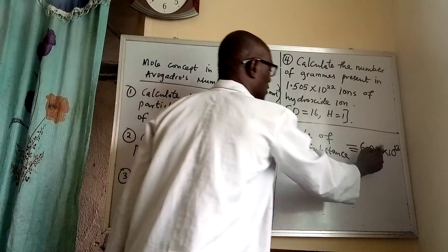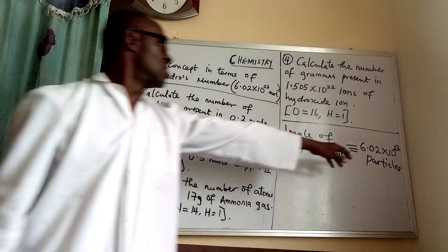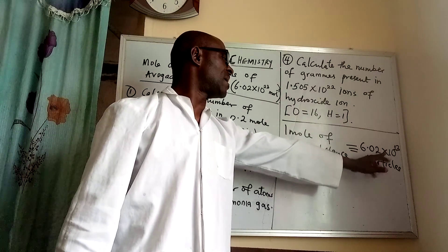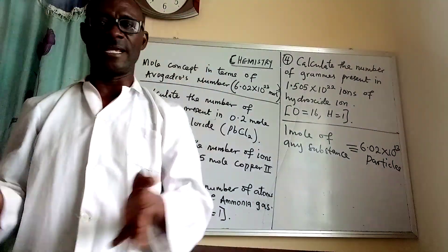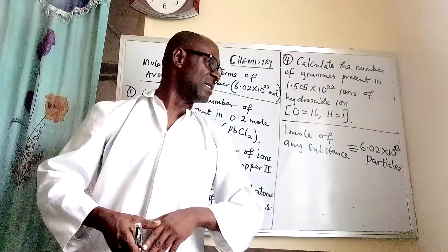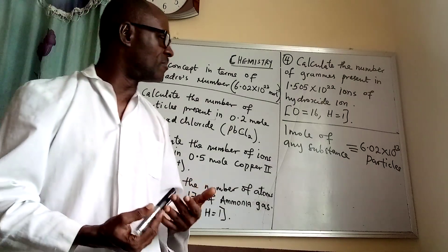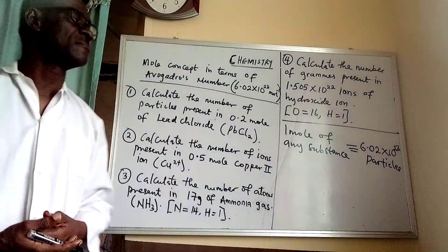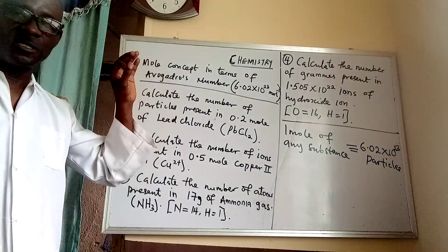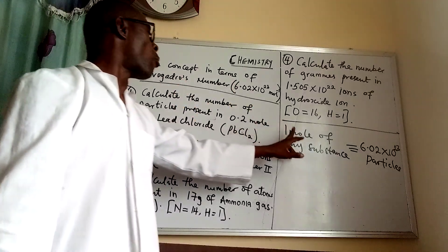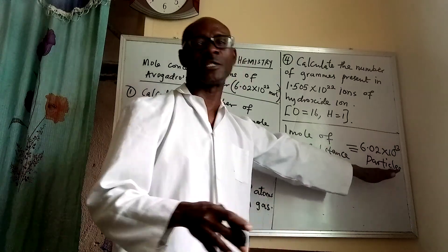Number of particles. Now, Avogadro's number is expressed in particles. The particles can be in any form — it could be atoms, ions, electrons, protons. It can be any particle. But one thing that remains unchanged is one mole of any substance has this number of particles.